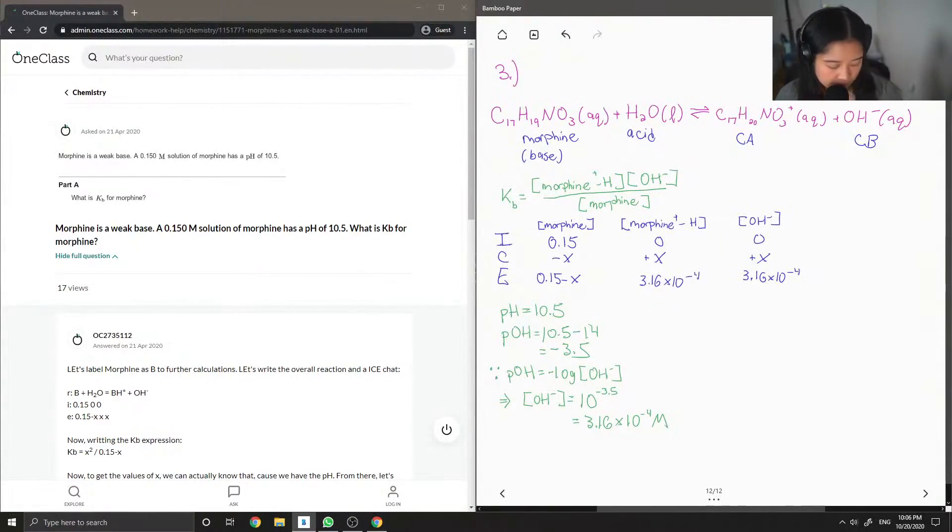So now that we know what x is, we can sub the concentration values in our Kb reaction equation. So you get 3.16 times 10 to the negative 4 squared, all over 0.15 minus 3.16 times 10 to the negative 4. And then our final Kb value should equal 7 times 10 to the negative 7.